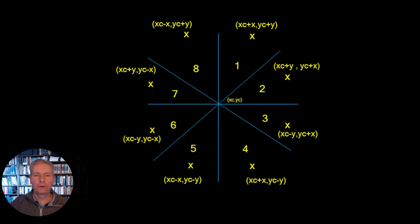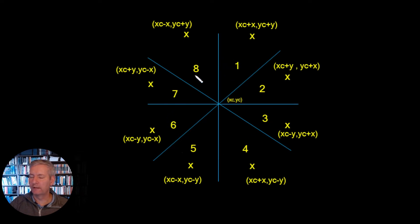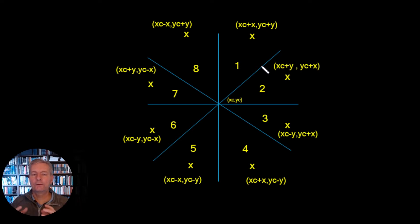Before continuing, the algorithm so far has only generated enough points for one octant — just 45 degrees of the full 360-degree circle. The circle is split into 8 octants, each 45 degrees. Our algorithm has only covered the first octant.